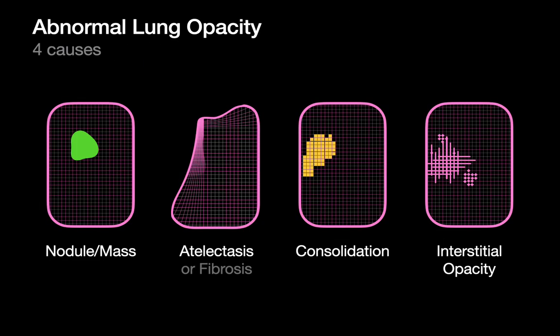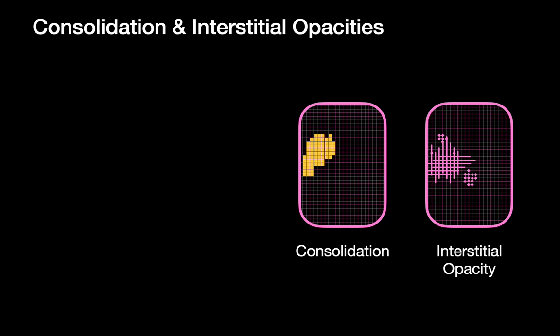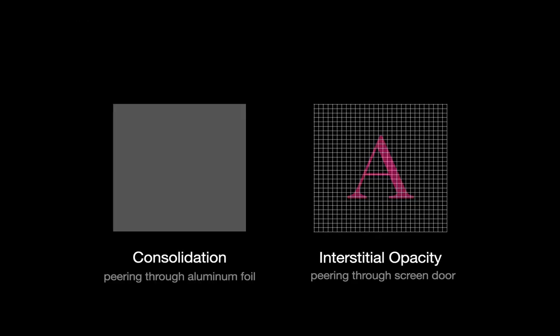There are four main mechanisms for creating an abnormal opacity in the lung, and in this talk on isolated ground glass opacities we're effectively discussing two of them. The difference between consolidation and interstitial opacity on chest CT can be best described as the difference between peering through aluminum foil versus peering through a screen door.